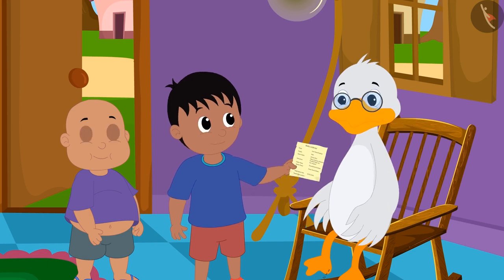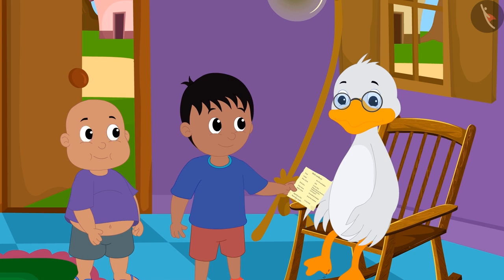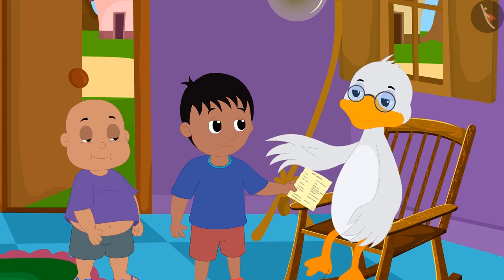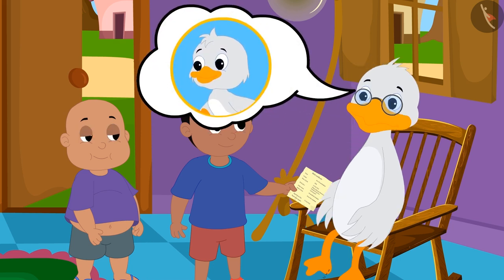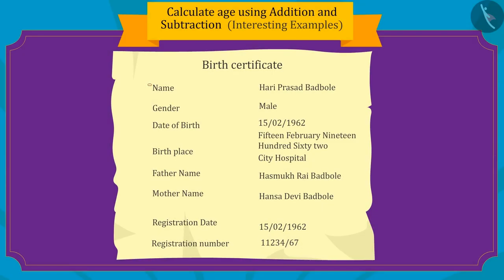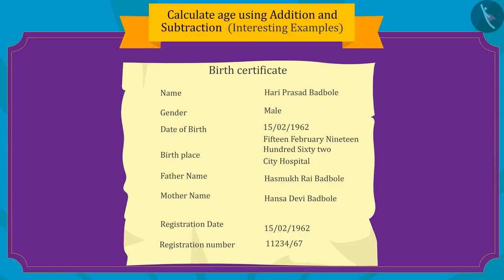What is this birth certificate, uncle? Uncle explains to them that a birth certificate is issued at the time of every person's birth. Important information is written on it, such as the person's name, date of birth, etc. Children, do you know about birth certificates?